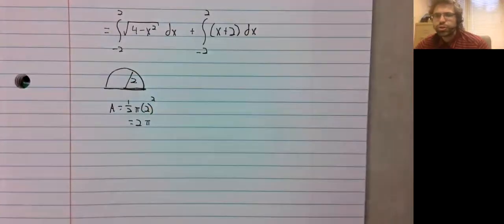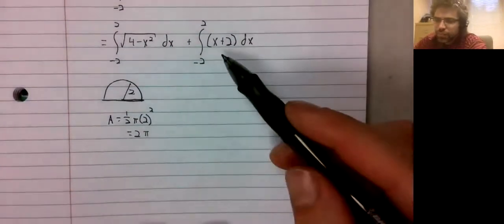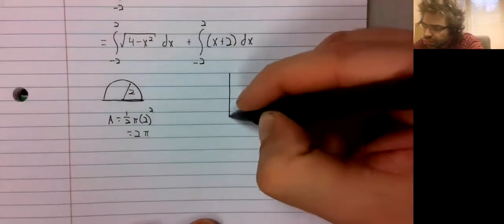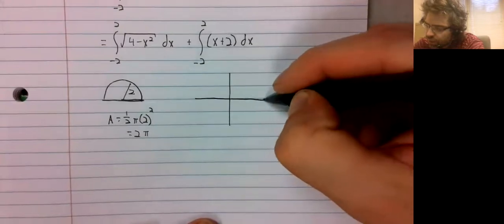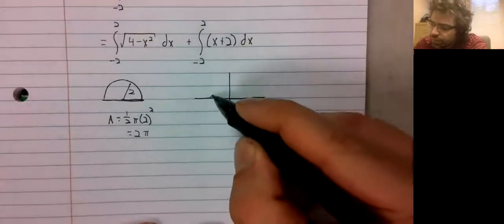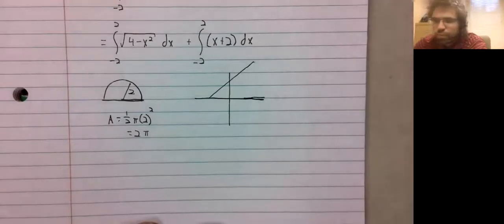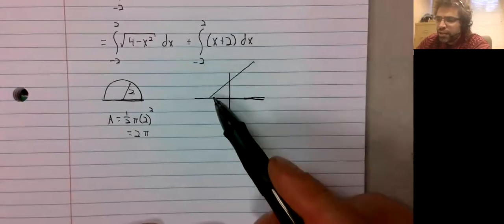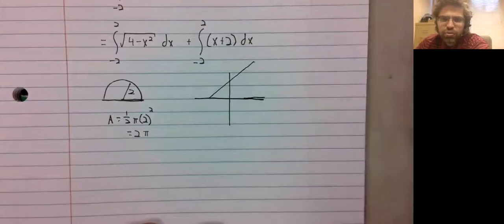And this integral. X plus 2 from negative 2 to 2. Well, it's a linear, it's a straight line. At negative 2, it's a zero. And then it goes up.